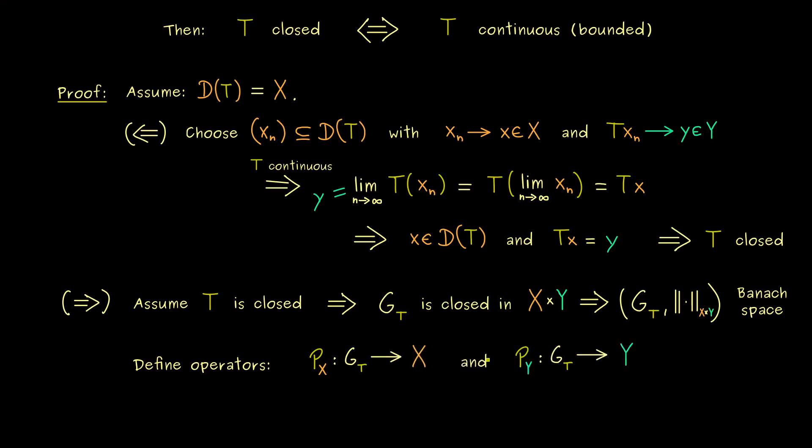Both should have the Banach space G_T as their domain. And then they should map to X and Y respectively. And now you can already guess what the two operators should do. If you take a pair from G_T they should map it to the first component or the second component. In other words both operators are really simple in the definition.